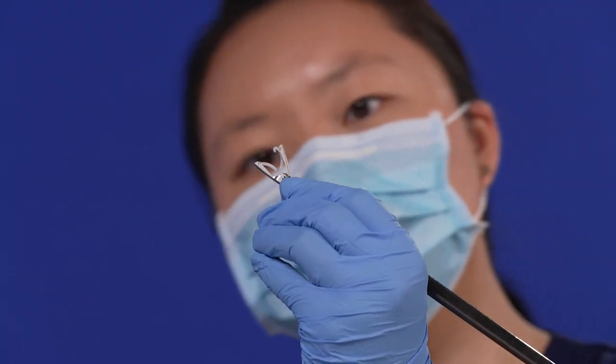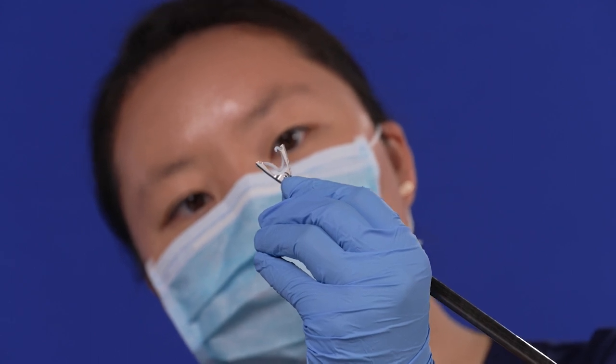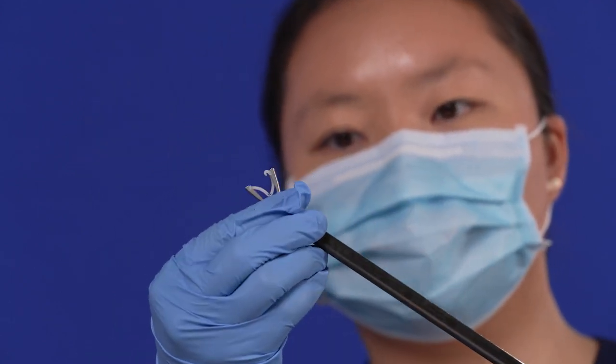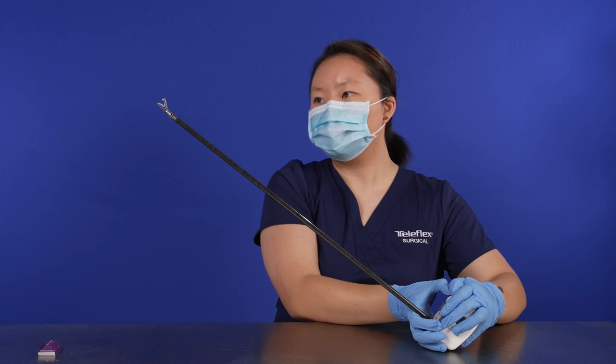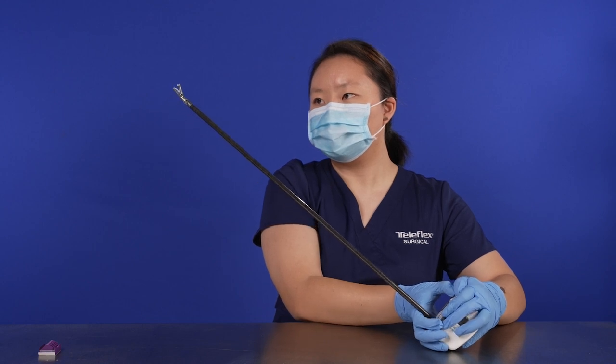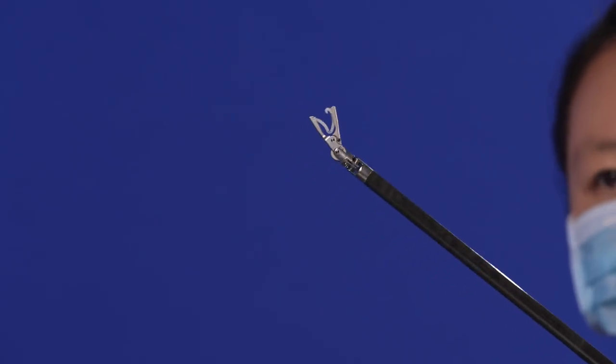Once installed, visually inspect the instrument tips to ensure that the clip is securely seated in the applier jaws. The clip bosses should be seated in the notches of the applier jaws.